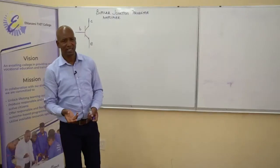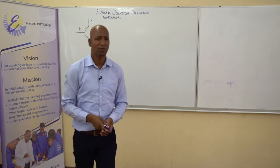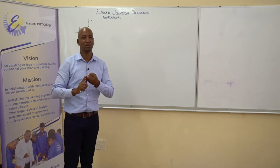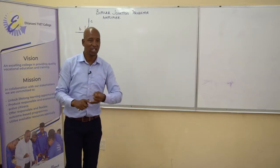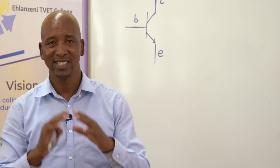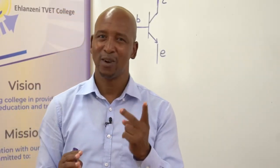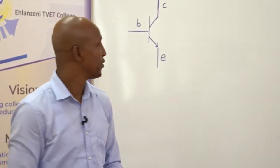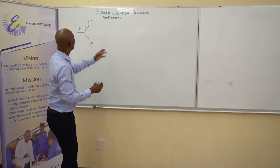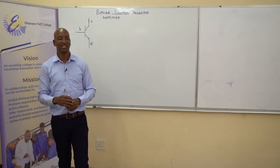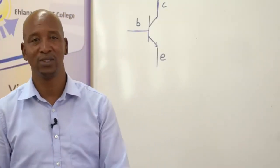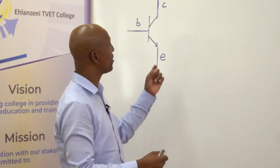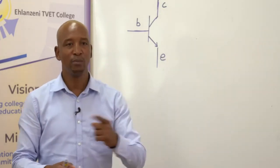We can simply say it's a three-terminal device which is capable of switching and amplification. Those are the two main purposes of a transistor. If you see a transistor in a circuit, you should know it is there either as a switch or as an amplifier. We shall look into a transistor as an amplifier, as we have looked at it as a switch in level 3 and level 2.